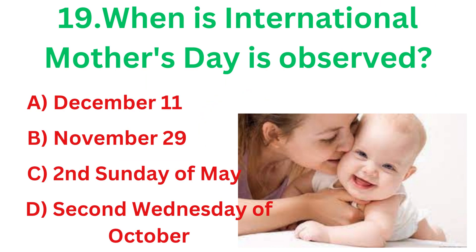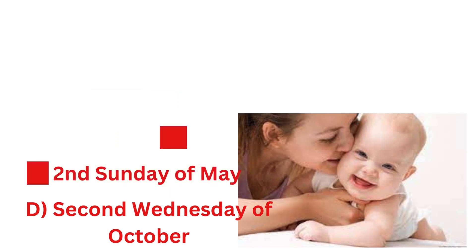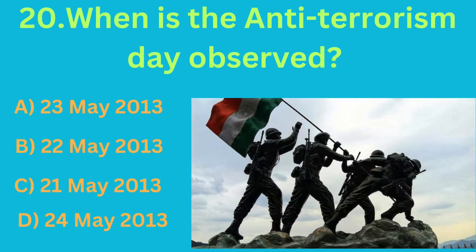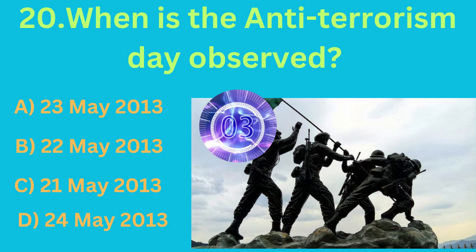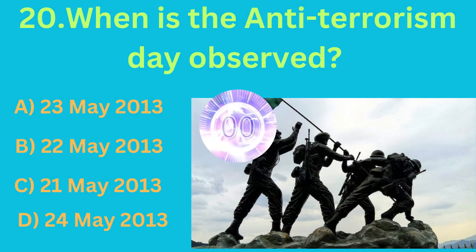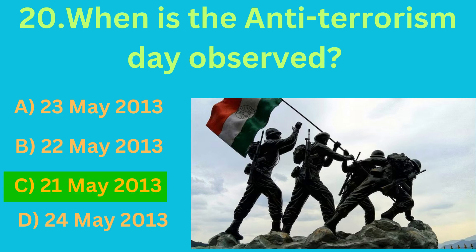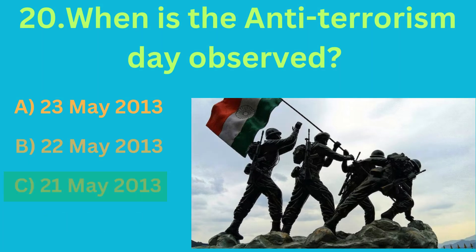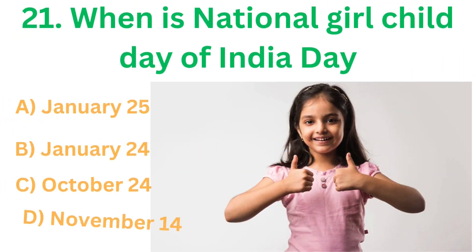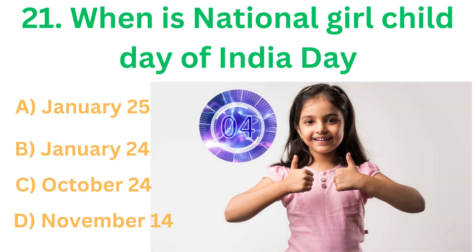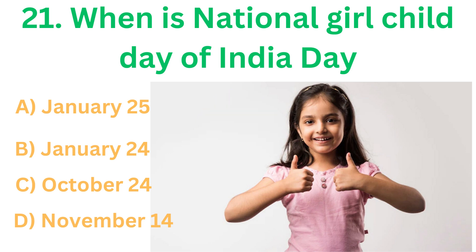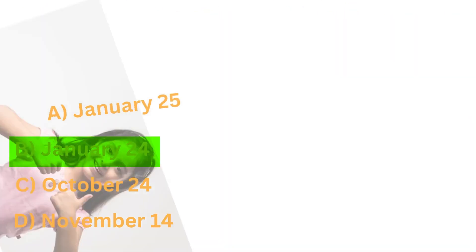When is International Mother's Day observed? The correct answer is option C, 2nd Sunday of May. When is Anti-Terrorism Day observed? The correct answer is option C, 21 May 2013. When is International Child Day of India? The correct answer is option B, 24 January.